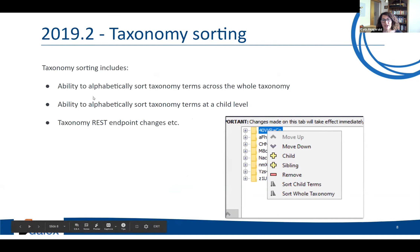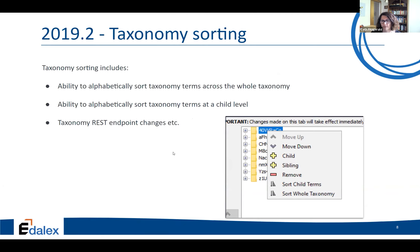Taxonomy sorting: we implemented the ability to alphabetically sort taxonomies across a whole taxonomy or at a specific child level, and we made some improvements to the REST endpoint as well. You can see here we have these new options.